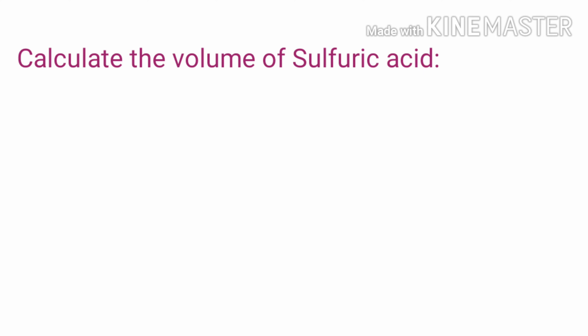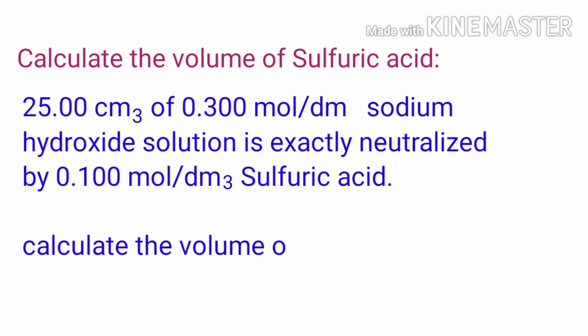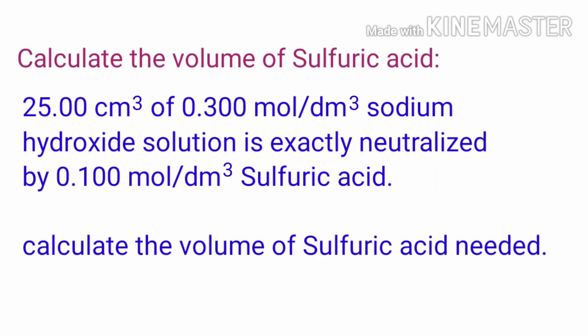Calculate the volume of sulfuric acid. 25.00 cm³ of 0.300 mol per dm³ sodium hydroxide solution is exactly neutralized by 0.100 mol per dm³ sulfuric acid. Calculate the volume of sulfuric acid needed.